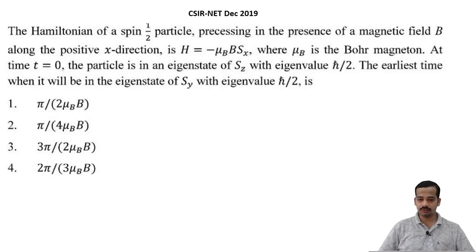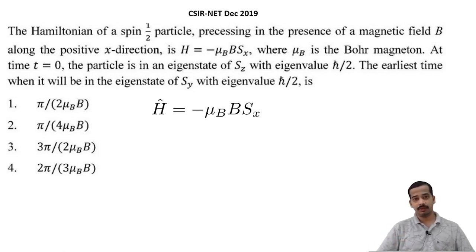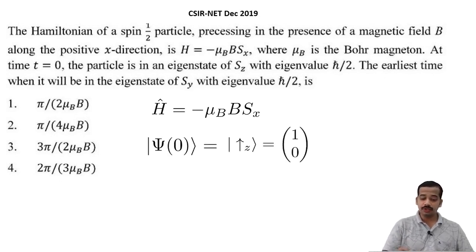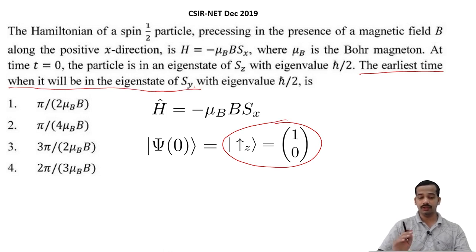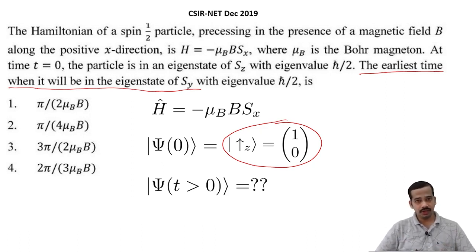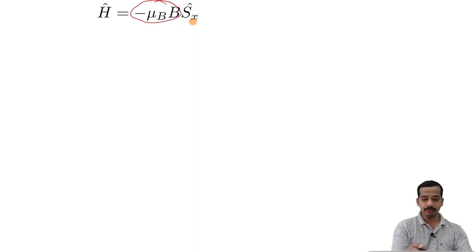Let us take a CSIR-NET December 2019 question. The Hamiltonian of a spin-half particle precessing in the presence of a magnetic field B along the positive x direction is H equals minus mu-B times B times S-x, where mu-B is the Bohr magneton. At time t equal to 0, the particle is in the eigenstate of S-z with eigenvalue h-bar over 2, meaning the state is spin-up-z. He is asking: what is the earliest time when it will be the eigenstate of S-y with eigenvalue plus h-bar over 2? To do this, we need to find the time evolution. Before proceeding, let us collect the energy eigenvalues and eigenvectors.